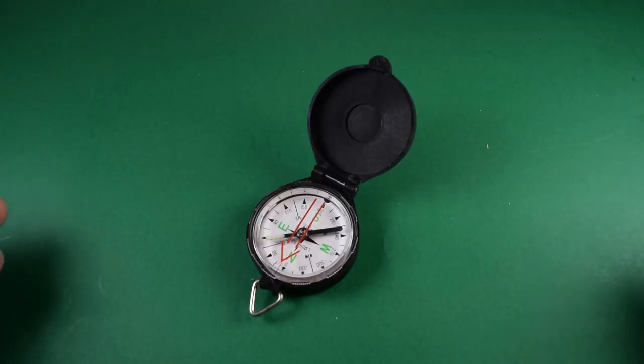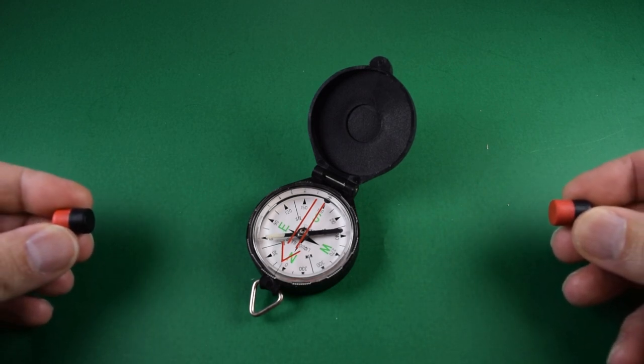If the compass were placed in a different magnetic field, that needle would swing and try to align with it.